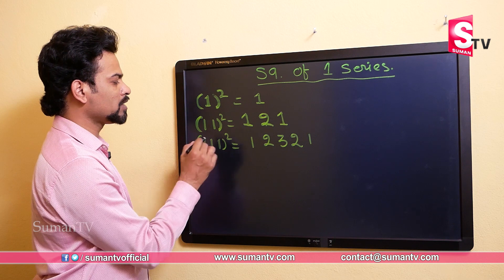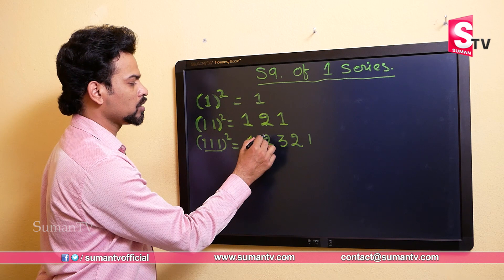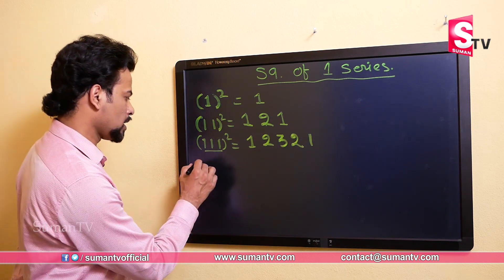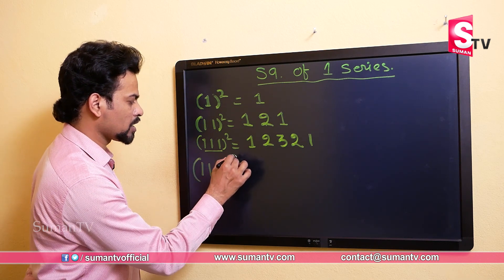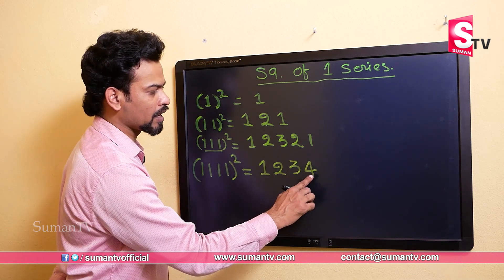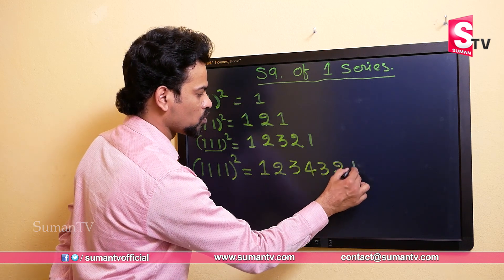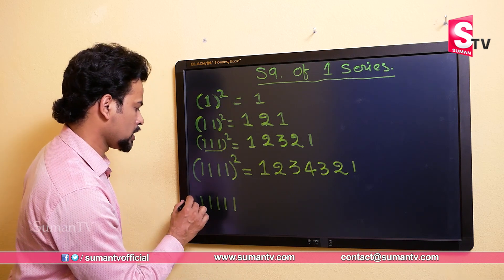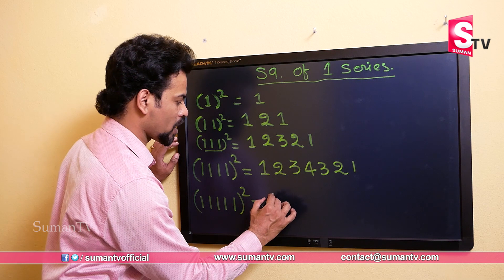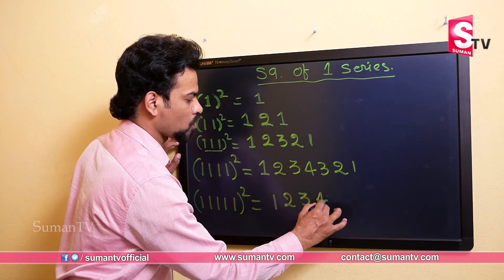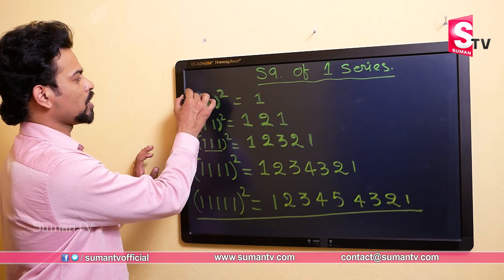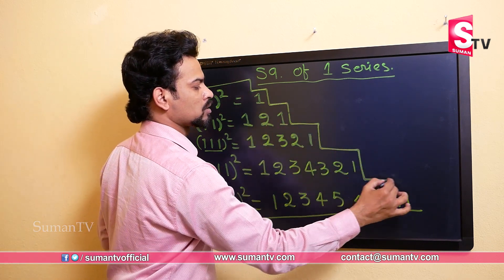For 111 squared, there are three digits, so we go up to 1, 2, 3 and then decrease: 2, 1 — giving 12321. For 1111 squared, there are four digits, so we write 1, 2, 3, 4 then decrease: 3, 2, 1 — giving 1234321. For 11111 squared, there are five ones, so we write 1, 2, 3, 4, 5 then decrease: 4, 3, 2, 1 — giving 123454321. In this way you can find the squares of any one-series number.